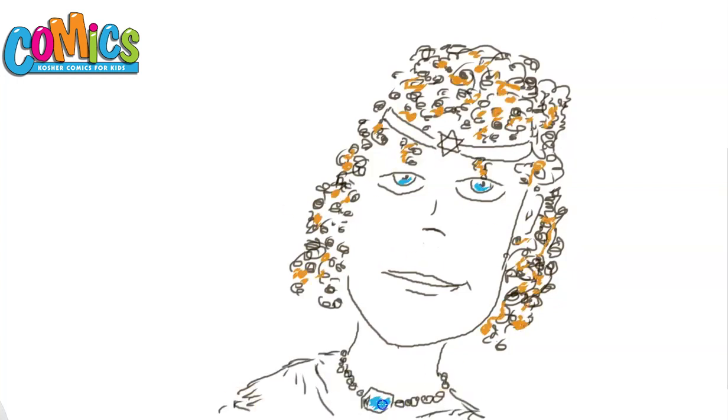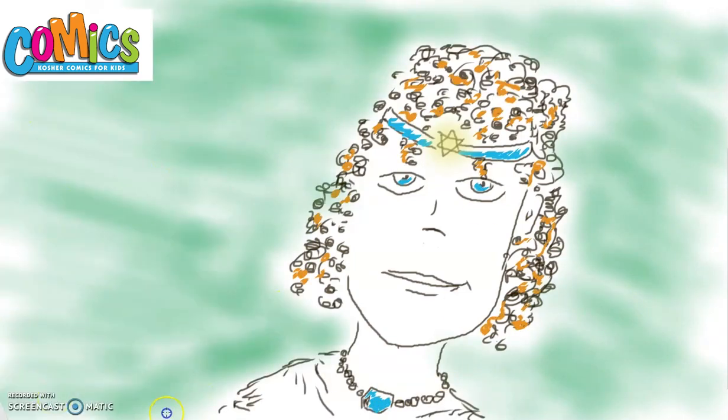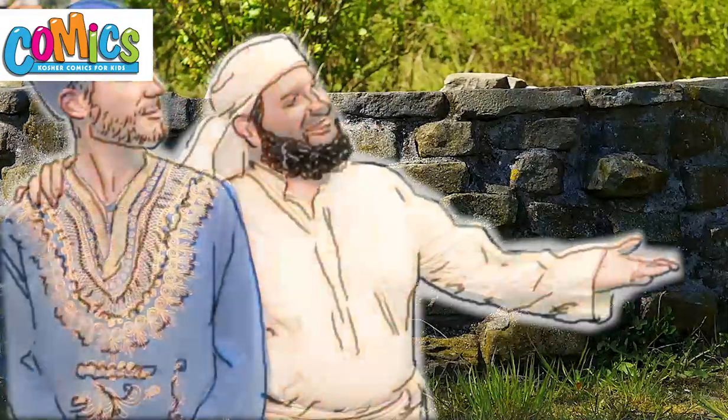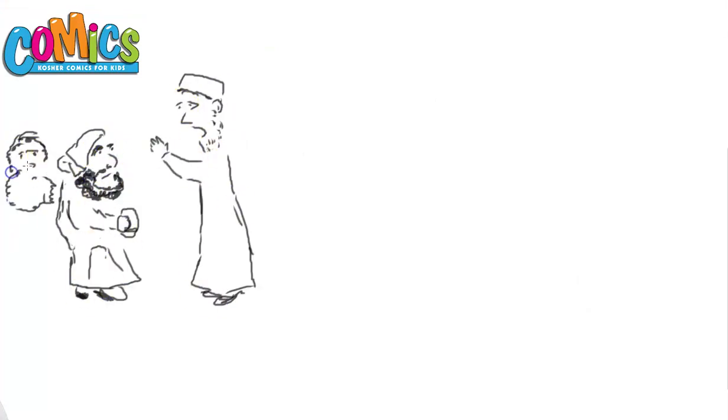Rivka tells her family what happened and Lavan, her brother, runs to the well and invites Eliezer to stay with them to wash and dine. Eliezer insists first to tell them about his mission and how the sign came true and Rivka watered all his camels.